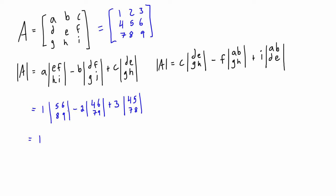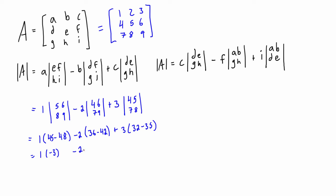Simplifying: we get 1 times (5×9 − 6×8) = 1×(45 − 48), minus 2 times (4×9 − 6×7) = −2×(36 − 42), plus 3 times (4×8 − 5×7) = 3×(32 − 35). That gives us 1×(−3) minus 2×(−6) plus 3×(−3), which simplifies to −3 + 12 − 9.